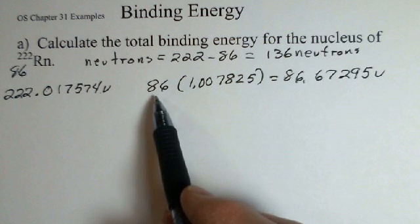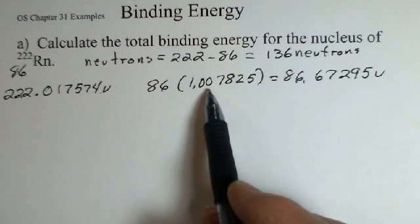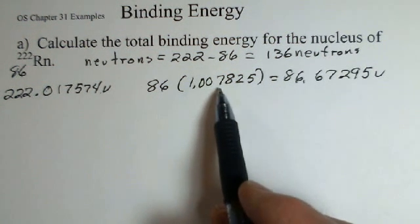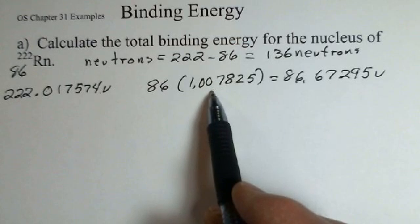This includes the protons and the electrons. This is a mass of a neutral hydrogen atom, one proton, one electron.